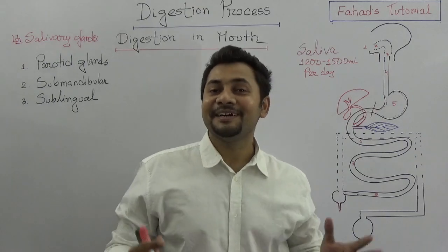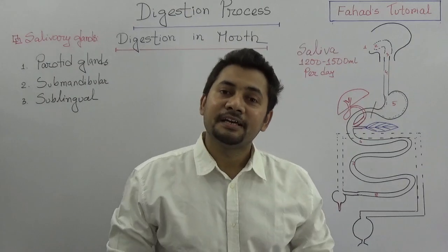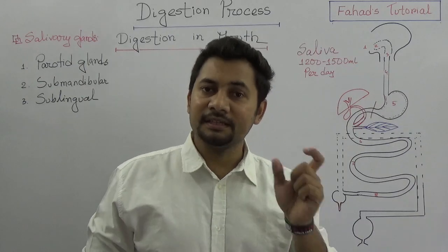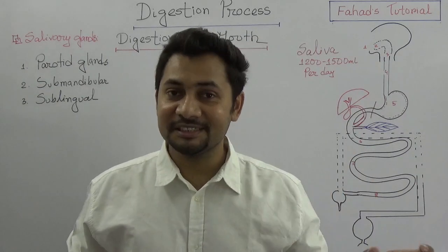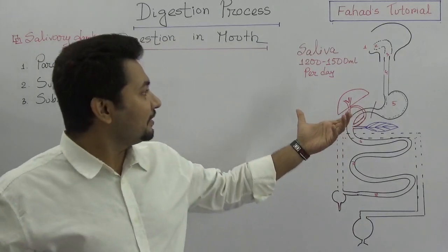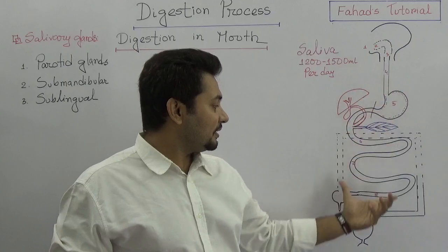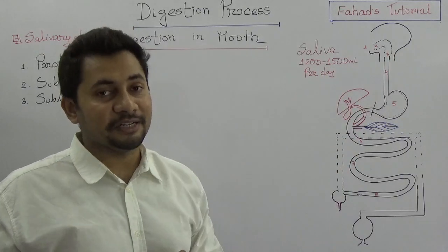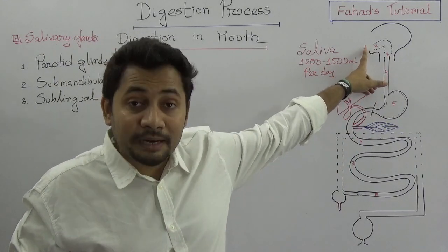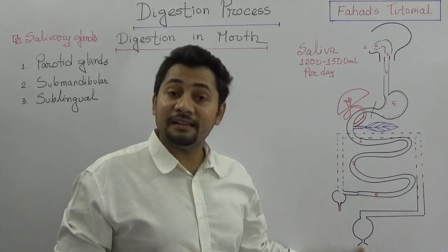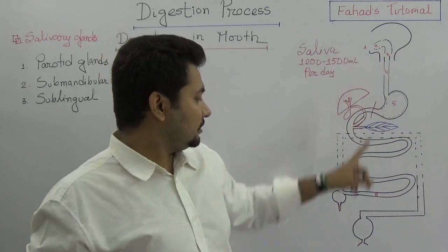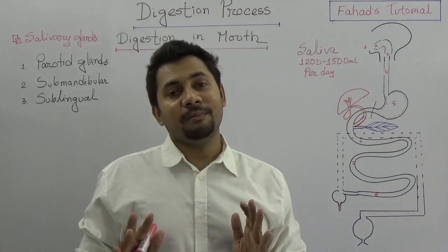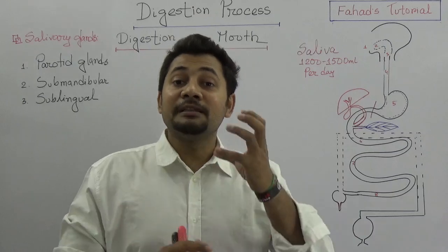Salam alaikum wa rahmatullah. I hope everybody is doing great and having good health. This is the second video of the digestion process. In my previous video I explained a little bit about the introduction of the digestive process or the digestive system — a simplified figure showing the digestive system of the human body. It started with the mouth or the buccal cavity and ends with another opening known as the anus. So mouth to anus is our digestive tube or alimentary tube. In this video I am going to explain shortly about the digestion process in the mouth or the buccal cavity.